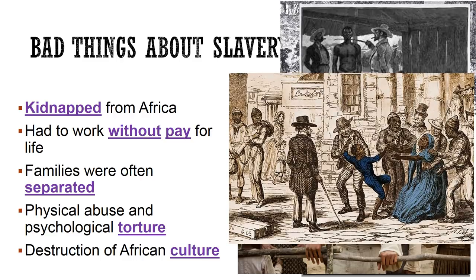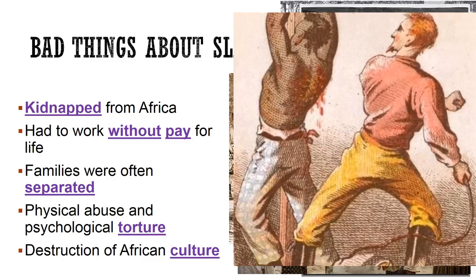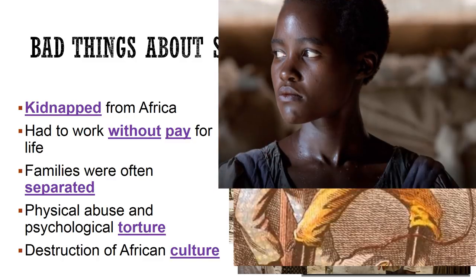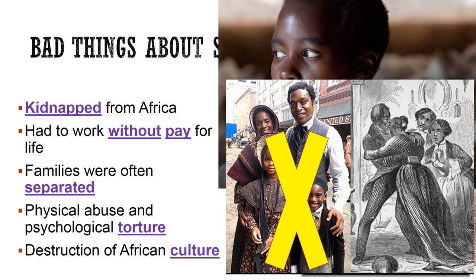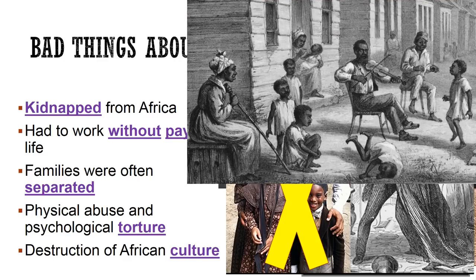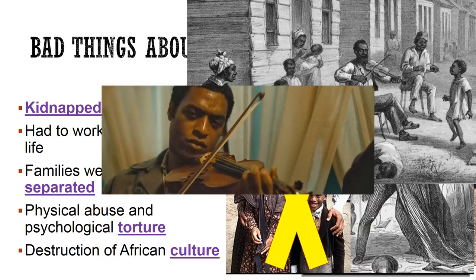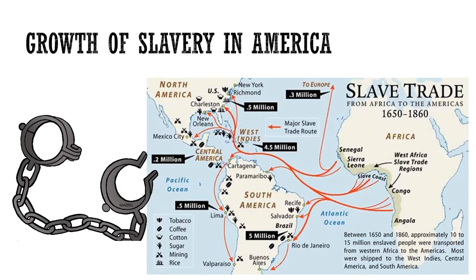Families were often separated from one another. Physical abuse abounded, and the psychological abuse was torture — living every day not knowing how you were going to be treated by those you worked for and having no hope of ever having a future apart from the slave life. Slavery also destroyed the African culture that many had brought with them from their homeland. Even though African Americans had a culture of their own through music and stories, much of it was blended with the culture of the colonies and the South, and many of the old African traditions were lost as a result. Draw shackles next to your notes to show the cruelty of slavery.